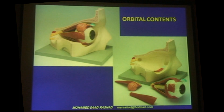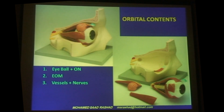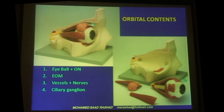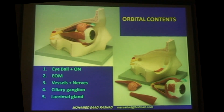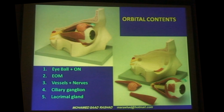The orbit is a bony structure containing very important contents: the eyeball, the optic nerve, the extraocular muscles, the vessels and nerves, and the ciliary ganglion — which is very important because it can have clinical impact. After orbital surgery, you may find the patient having a dilated pupil, sometimes related to injury to the ciliary ganglion. The lacrimal gland is on the superior lateral edge, and the levator splits it into the lower palpebral part and the upper orbital part.